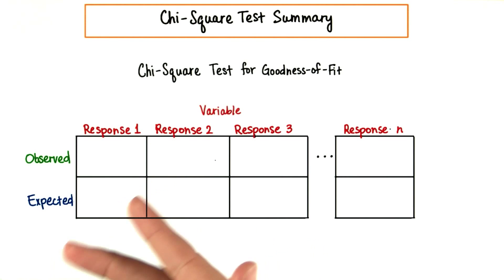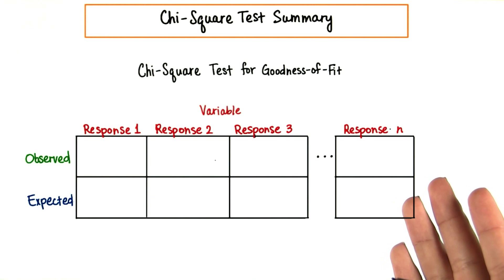In that case, there were just two responses, but there can be as many as we need for a particular categorical variable.